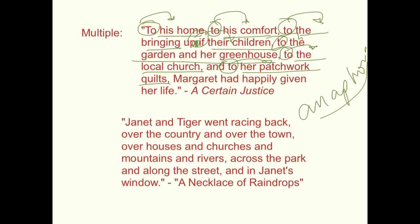This sounds really nice because it's an anaphora. But you can also do it when it's not an anaphora. So take a look. Janet and Tiger went racing back over the country and over the town. Over houses and churches and mountains and rivers. That's a really long one, four objects. Across the park. And along the street. And in Janet's window. They raced a lot of places, didn't they?